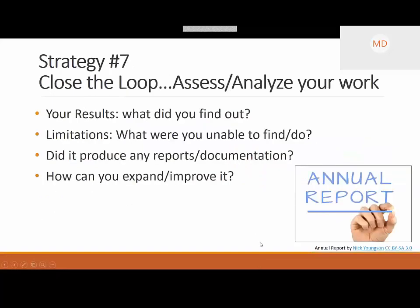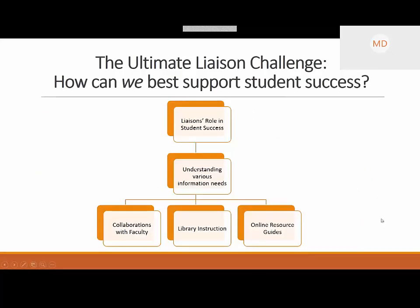Finally, close that loop — as a liaison, assess and analyze your own work. What results did you find? What were the limitations? Did it produce anything you can share? How can you expand and improve upon that? Not everything will work and that's okay. Document what you have, come up with suggestions, and there's always next semester to tweak things. The ultimate liaison challenge is: how can we best support student success? As a liaison, first understand who you're helping and what their needs are, and then think about what you can do — building those collaborations, informing your instruction, and informing your online research guides.